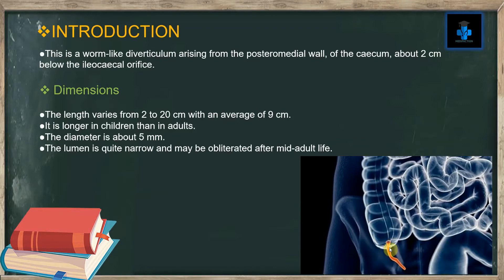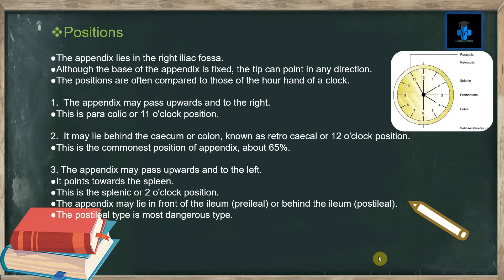Dimensions: the length varies from 2 to 20 centimeters, with an average of 9 centimeters. It is longer in children than in adults. The diameter is about 5 millimeters. The lumen is quite narrow and may be obliterated after mid-adult life. The appendix lies in the right iliac fossa.